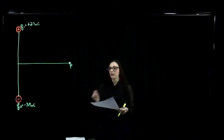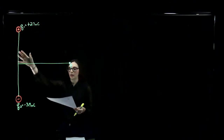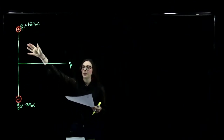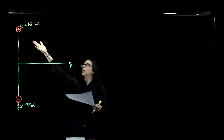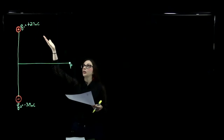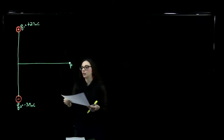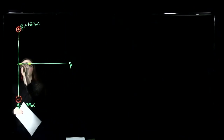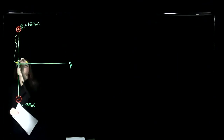We are going to calculate the electric potential due to a collection of point charges. We have two charges placed on the y-axis. The first charge has a charge of positive 2.7 nanocoulombs, located at a position of 25 centimeters from the origin. Here's my origin of an x-y coordinate system, so this distance here is 0.25 meters.